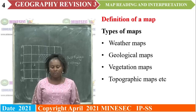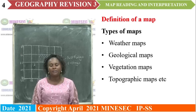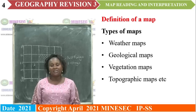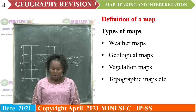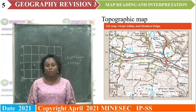Our focus at this level will be on topographic maps. What are topographic maps? Topographic maps are maps which show both physical and human features on the surface of the Earth. Signs and symbols are used to interpret these physical and human features on a topographic map. This is an example of a topographic map.